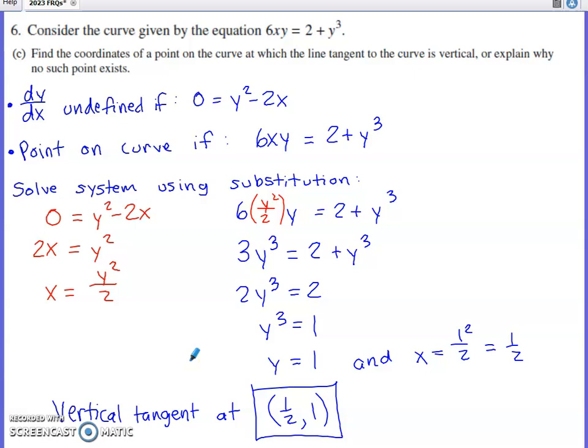Next part of the question asks something similar. Determine the coordinates of a point on the curve where the line tangent to the curve is vertical, or explain why you can't find one of those. The derivative is going to be undefined when the denominator of the derivative is equal to 0. Just like we did in part B, not only is the denominator of the derivative going to have to equal 0, but we're also going to have to satisfy the original equation.